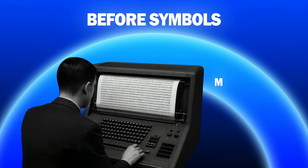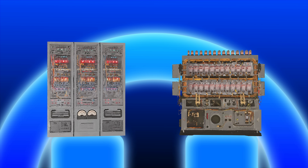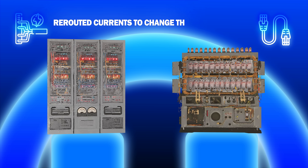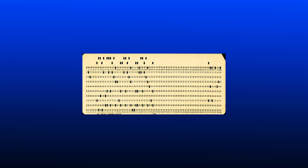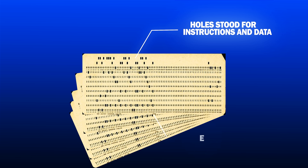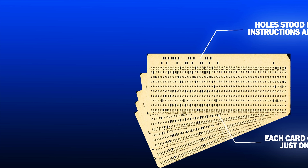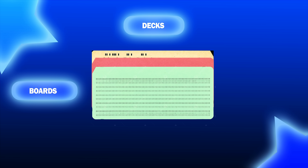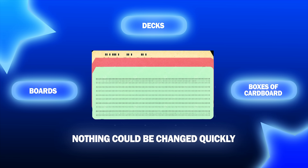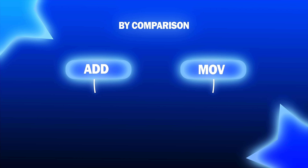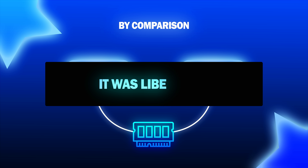Before symbols, programming was something even more physical. On early electromechanical machines, coding often meant rearranging wires on plugboards — a puzzle of cables that rerouted currents to change the machine's logic. Later came punched cards, stiff sheets where holes stood for instructions and data. Thousands might be stacked in sequence, each card carrying just one step. These methods worked, but they were slow, rigid, and unforgiving. Programs were heavy objects — boards, decks, boxes of cardboard. Nothing could be changed quickly. Every new problem meant a new set of wires or a fresh stack of cards. By comparison, the idea of writing short, symbolic instructions directly to memory was not just a convenience. It was liberation.